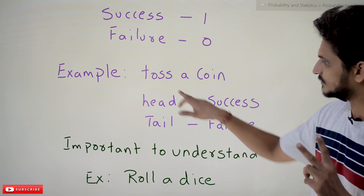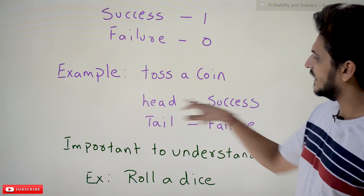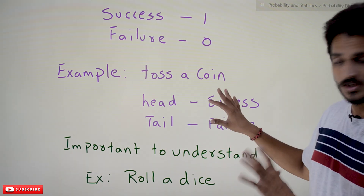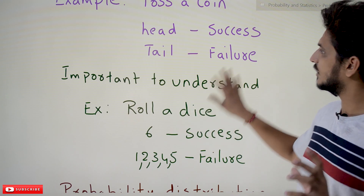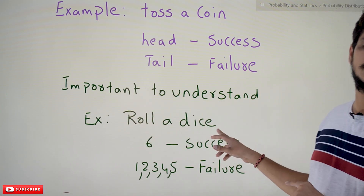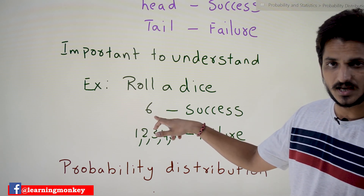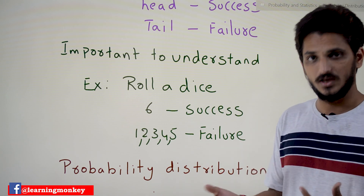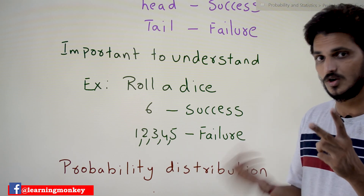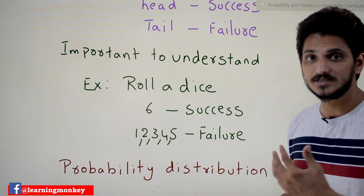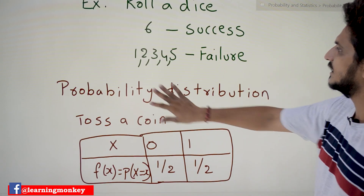If you are having only two possible outcomes, we call it a Bernoulli distribution. For example: toss a coin — we have only two possible outcomes, head and tail. Head is considered as success and tail as failure. Similarly, roll a dice — it is also a Bernoulli distribution. Let's consider six as success; when you roll a dice, remaining outcomes are failure. So we are having only two possible outcomes: success or failure. This is also considered a Bernoulli distribution.